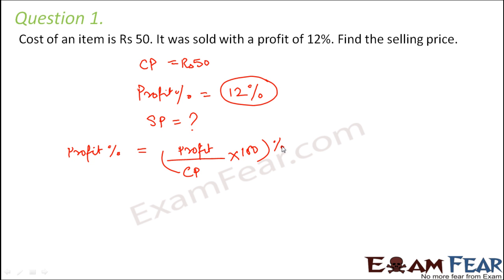So we can write it as 12 is equal to profit divided by CP which is nothing but 50 into 100. So 50 into 2, or we can say profit is equal to 12 divided by 2. So 2, 6 is a 12. So the profit is Rs 6.